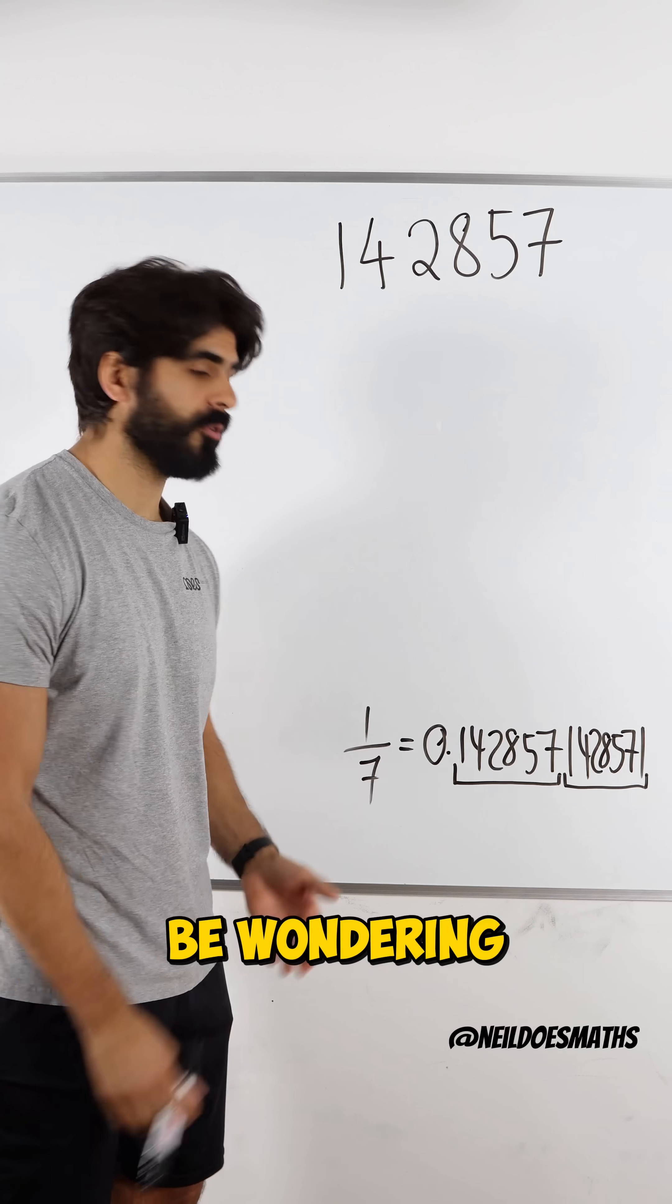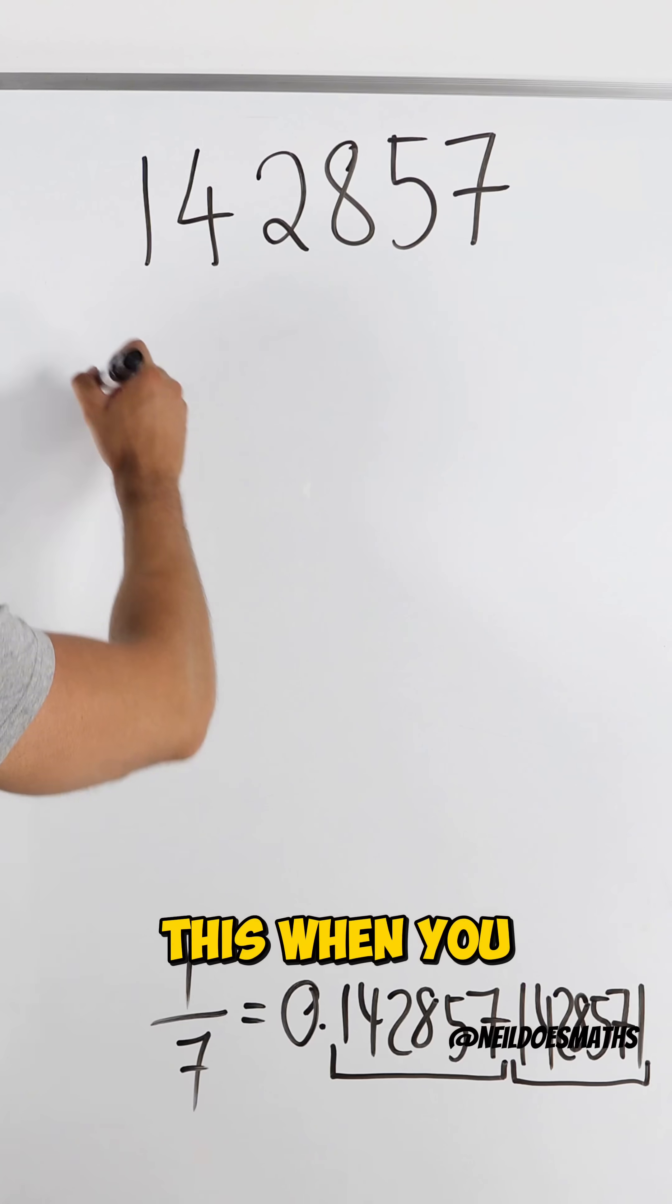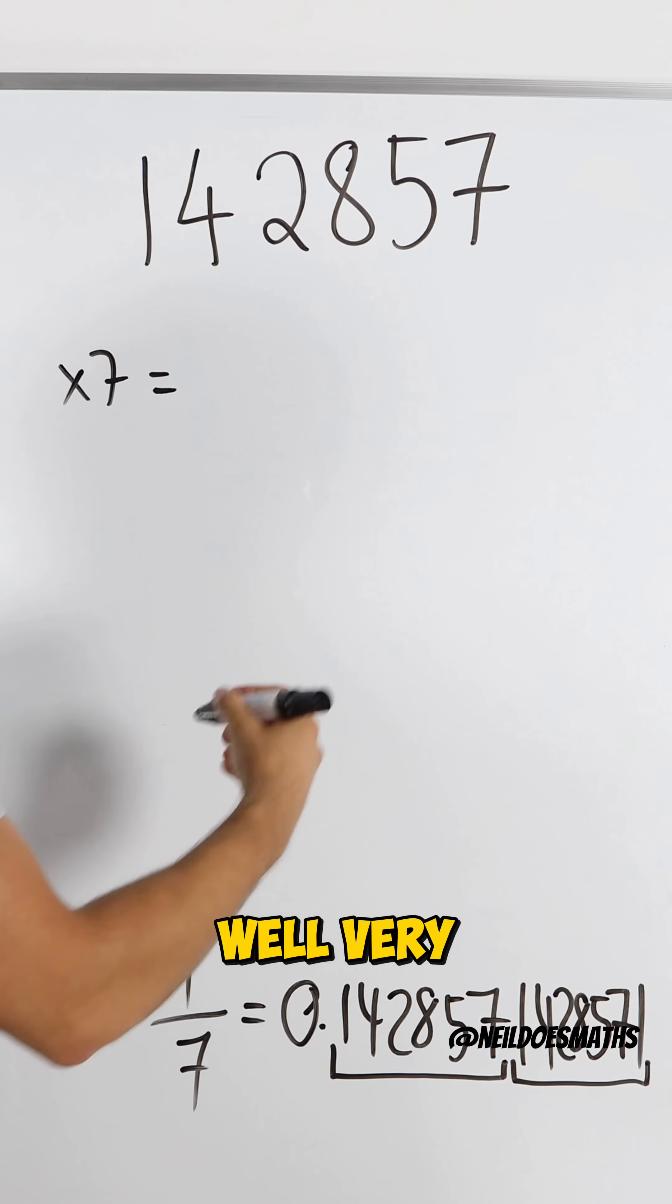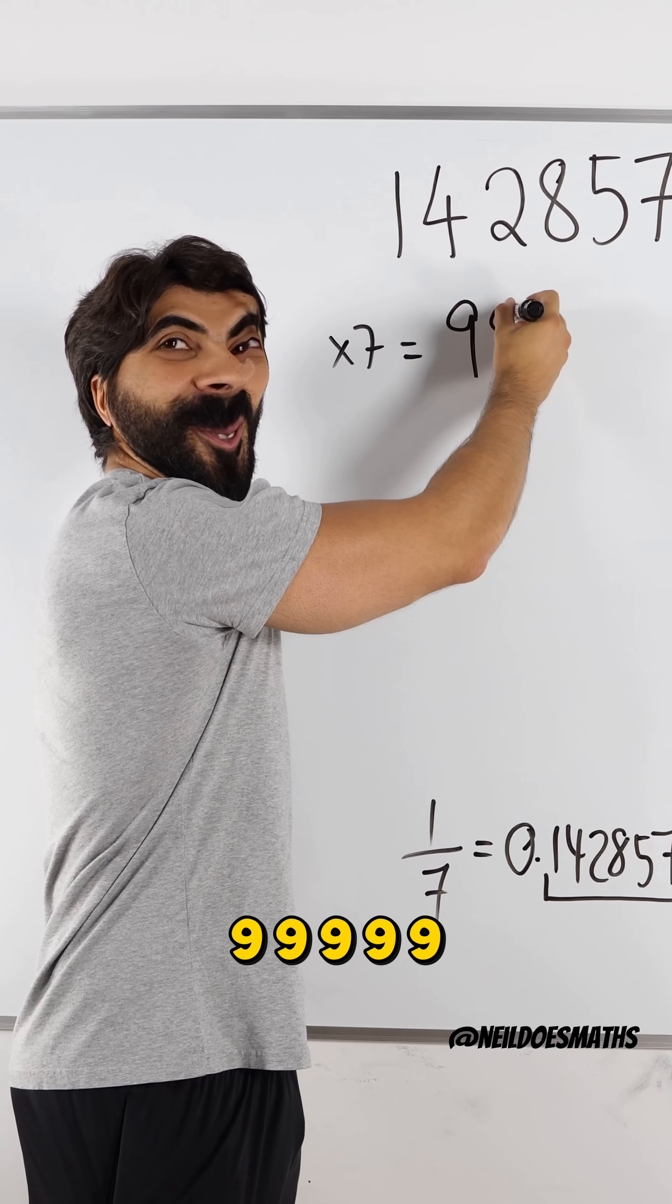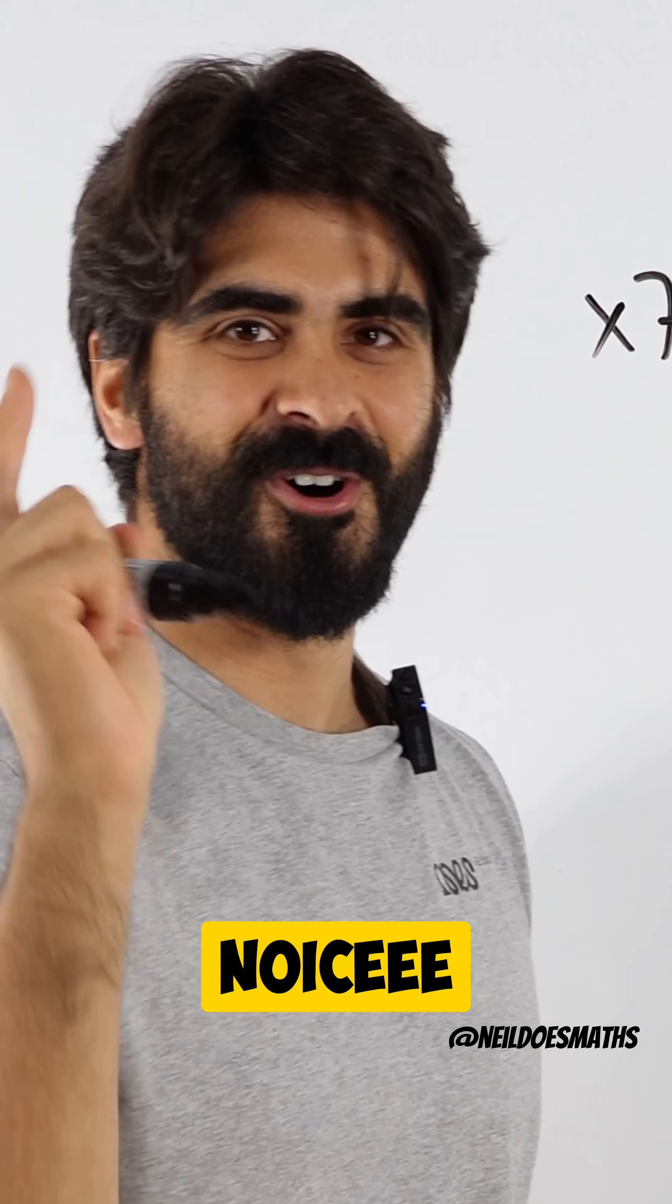And now you may be wondering, well, if 1/7 times 7 is 1, what happens to this when you multiply it by 7? Well, very interestingly, it gives you 9, 9, 9, 9, 9, 9. Nice!